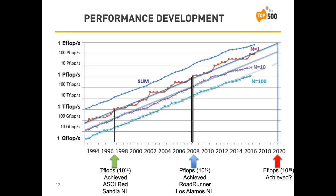So 10 to the 18 floating-point operations — a billion billion operations per second — in the year 2020. China is on record as saying they will achieve an exaflop in 2020, and in the U.S. we have plans to develop high-performance computing that will take us to exaflops in 2021.